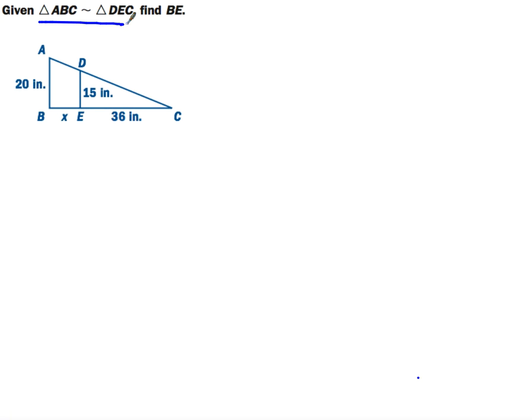Okay, when given that these two triangles are similar, you want to find BE, which is right here, which is the value of X.